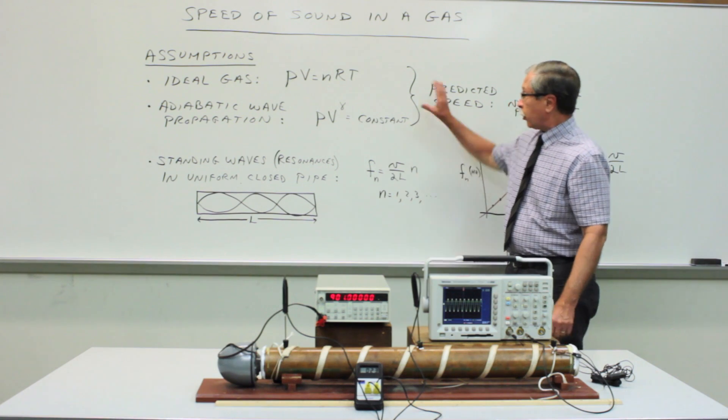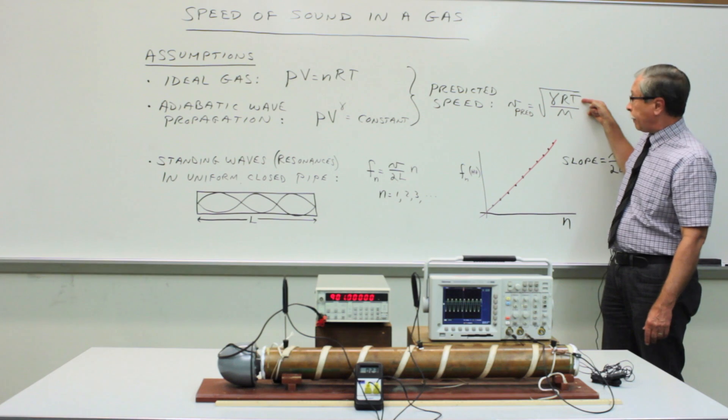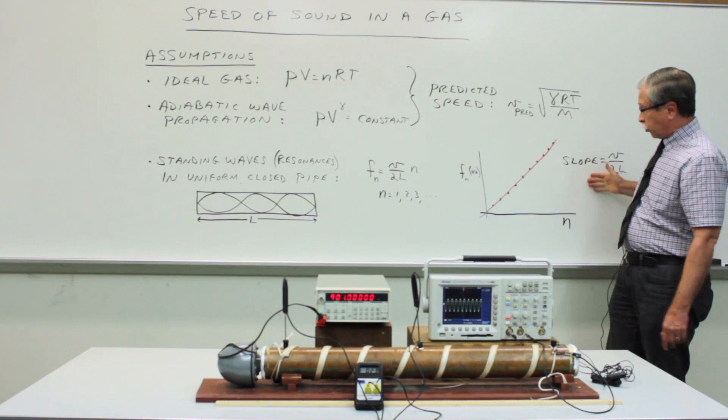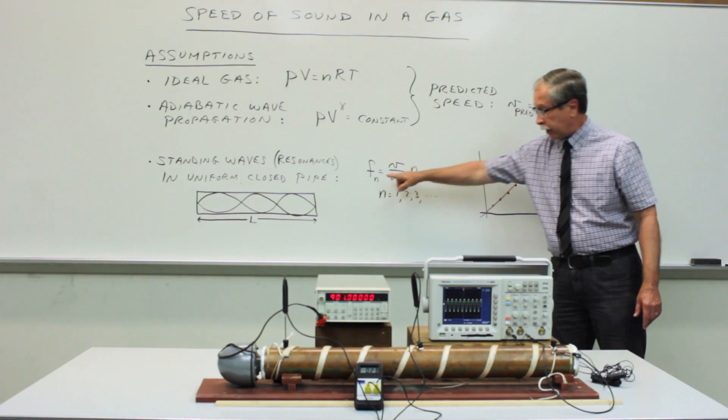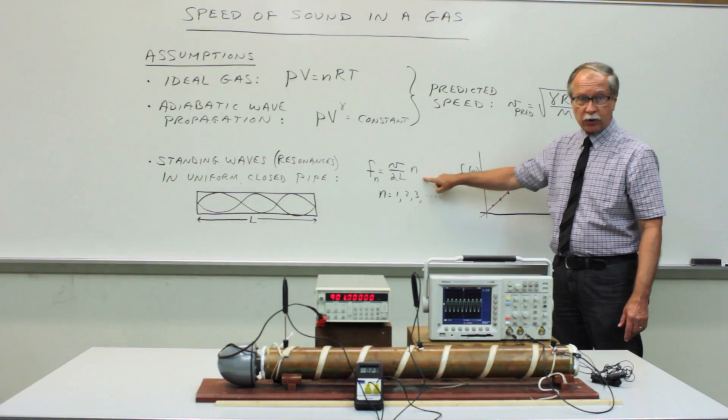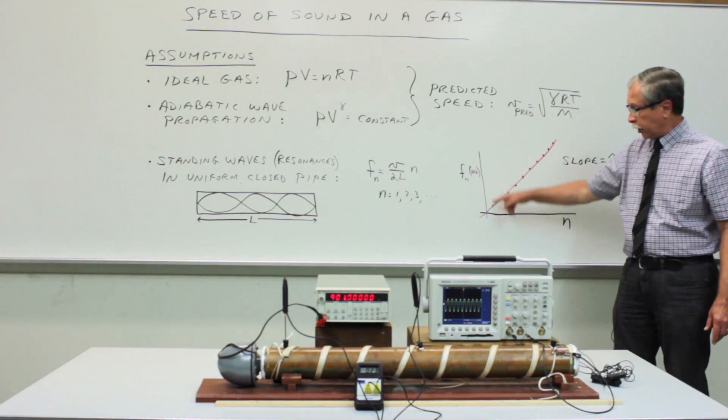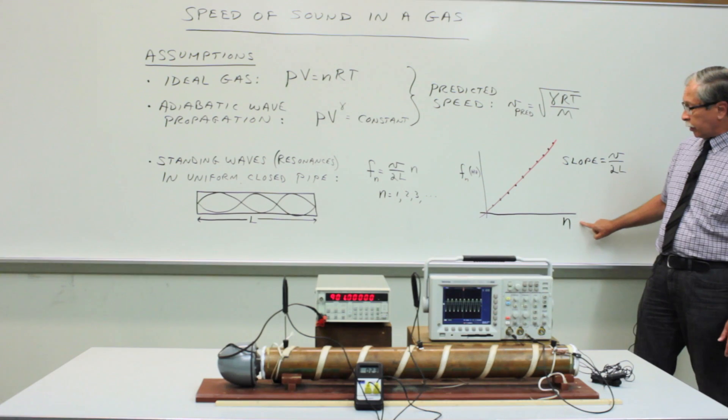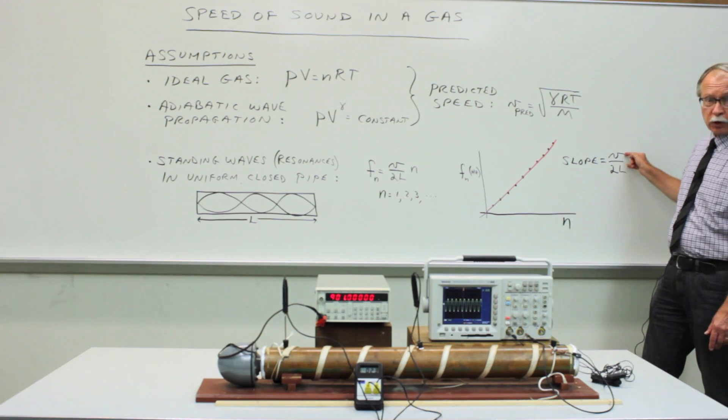So, just to recap, what we do is to predict the speed of sound by measuring the temperature. And then measure the speed of sound by gathering as much data as we can on the various resonances in the pipe. So find as many of these harmonics as you can. Plot the frequency of the resonance as a function of the harmonic number. And the slope is related to the experimental speed of sound.